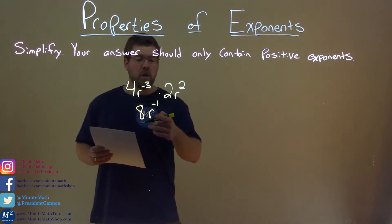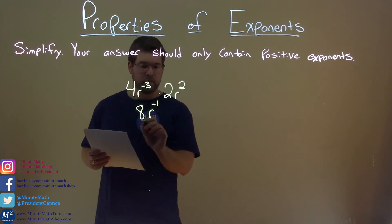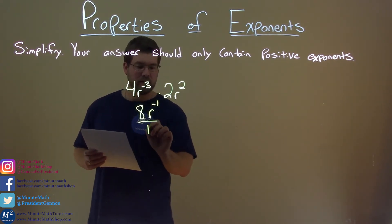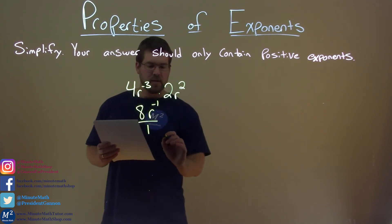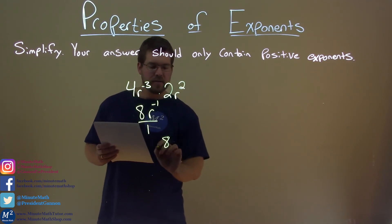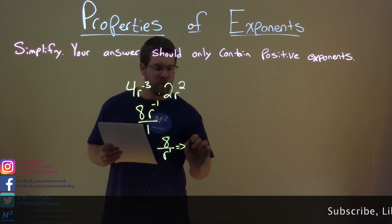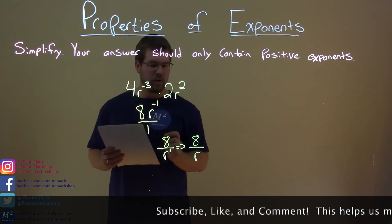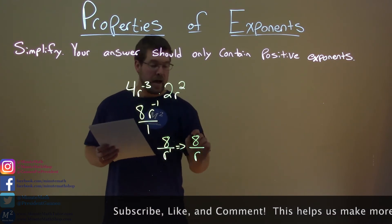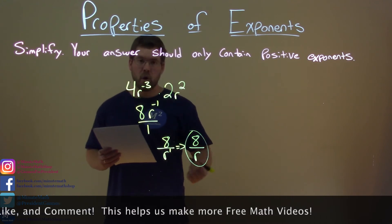We have a negative exponent here, and r is essentially in the numerator. This is really 8r to the negative 1 over 1. We can rewrite this to be 8 divided by r to the positive 1 power, which is just 8 over r. We don't need to write that one exponent, and our final answer is just 8 over r.